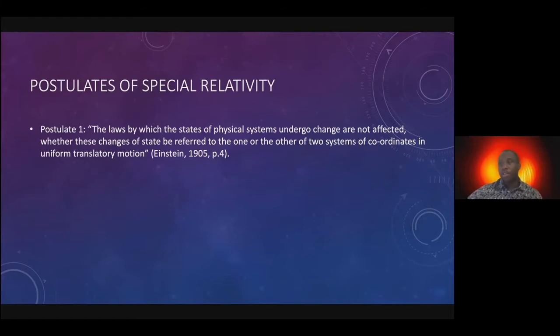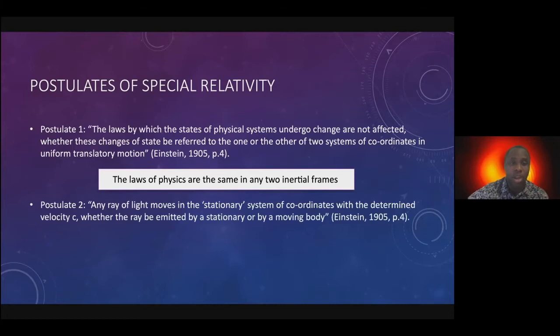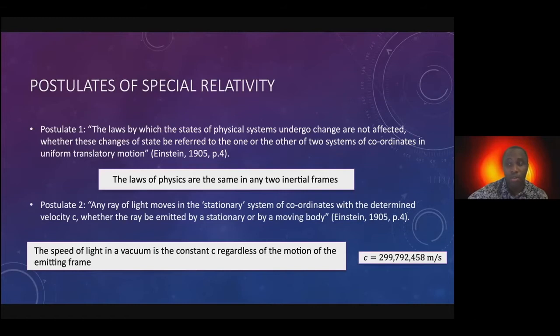So it seems that the current established by the electric field in the first case, depending on the state of relative motion, is the same current established by the magnetic field. Einstein's thought experiment tells us that electricity and magnetism may be two sides of the same coin. In the spirit of relativity, we have a number of postulates. The laws by which physical states of systems undergo change are not affected whether these changes refer to one or the other of two coordinate systems in uniform translatory motion. The laws of physics are the same in any two inertial reference frames.